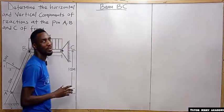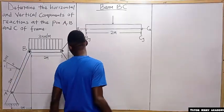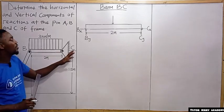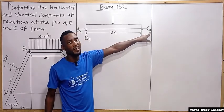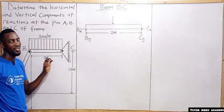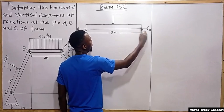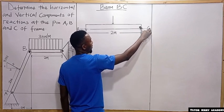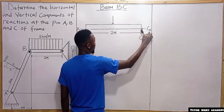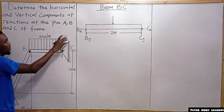We are going to draw the free body diagram of beam BC. At point C we have two reactions — C subscript x (horizontal reaction) and C subscript y (vertical reaction) — because there is a pin there with no movement in the x or y direction. At point B we also have a vertical reaction B subscript y and a horizontal reaction B subscript x.